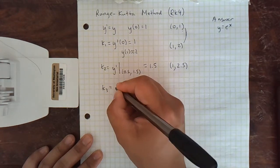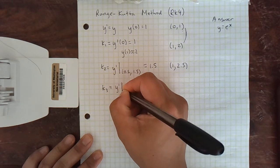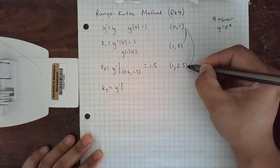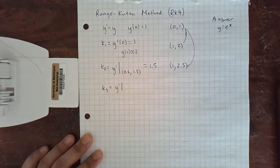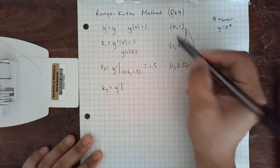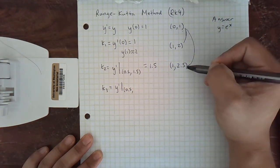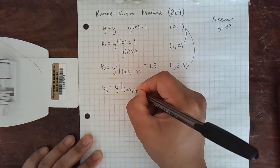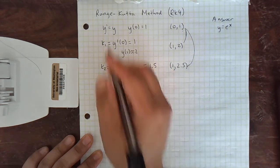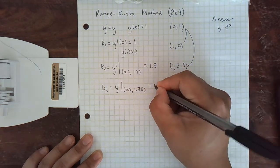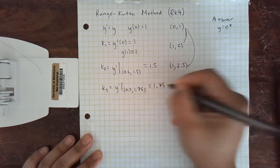Now k3, we take y' and we're going to take the midpoint of these two points. So it may be better, but definitely a different midpoint. So halfway between 0 and 1 is still 0.5. And halfway between 1 and 2.5 is going to be 1.75. And again, we have our easy differential equation, y' equals y. So k3 is 1.75.